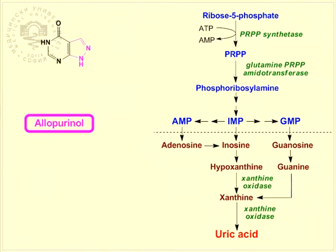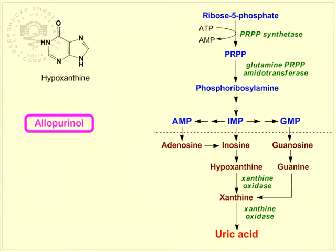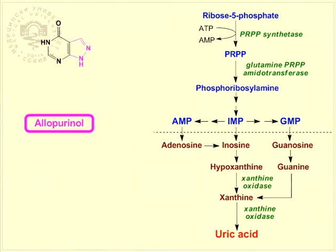Gout can be treated using the synthetic drug allopurinol. Allopurinol is a structural analog of hypoxanthine. The two compounds differ only in the 5-atomic heterocycle: imidazole in hypoxanthine and pyrazole in allopurinol.